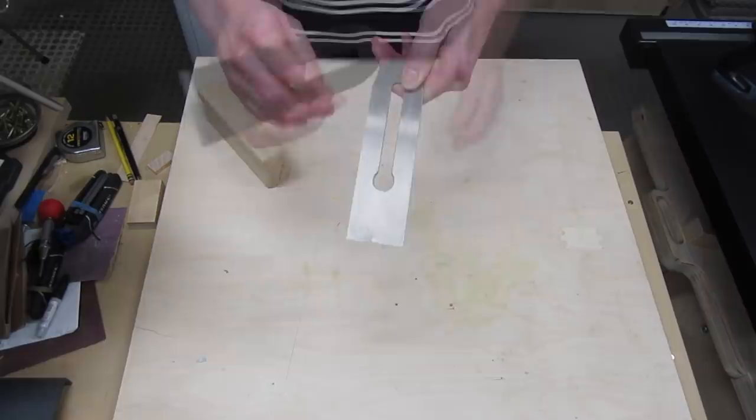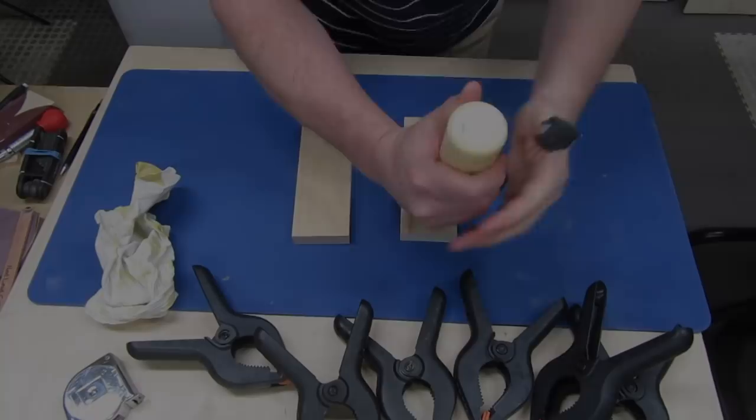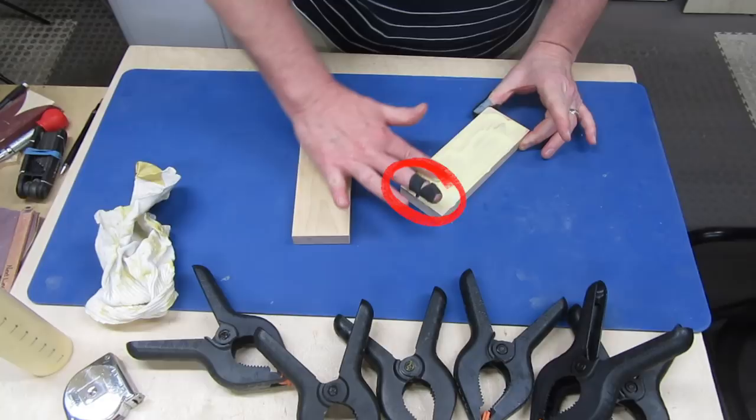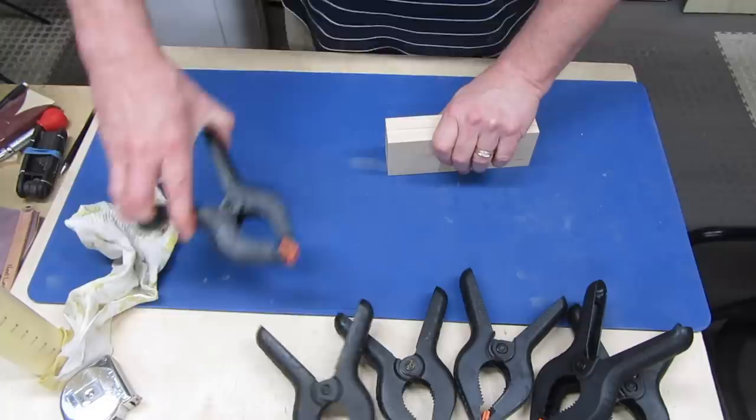I started out by laminating a couple of pieces of maple together for the handle. Oh yeah, see this band-aid? And this one? Plane blades are freaking sharp! Don't have your hand anywhere near where you're pushing the chisel plane, or one slip will have you wishing you'd listened to me.